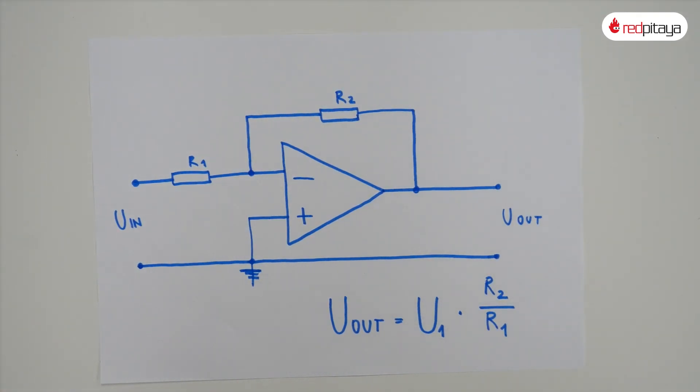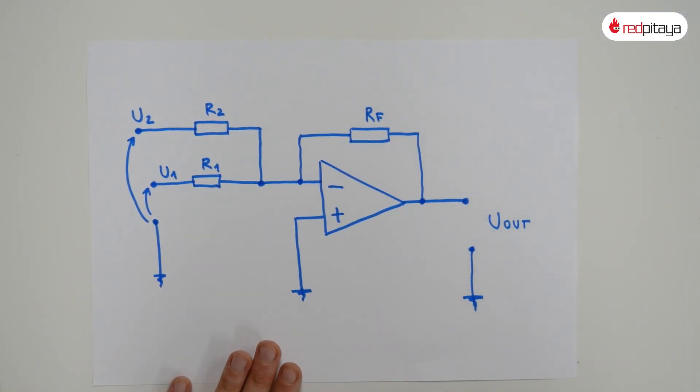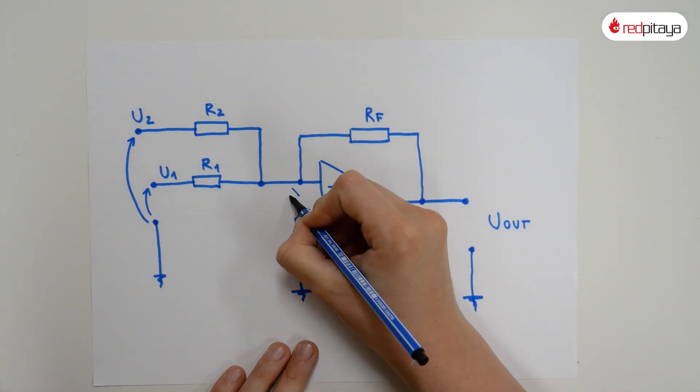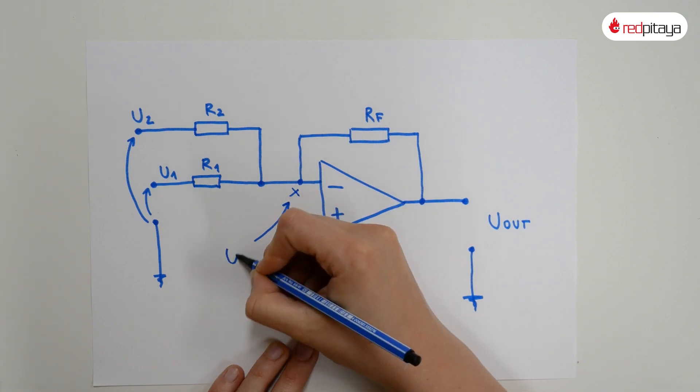Now the question is, what would happen if we added multiple inputs? A short circuit. We would do a short circuit, at least if we connected it in the same node. The negative input, in this case, is a virtual ground. This means it is at 0V. Adding another signal at the same potential would change nothing.